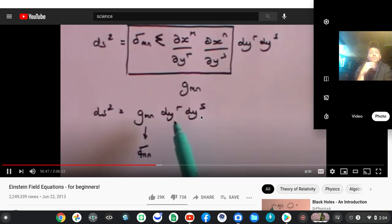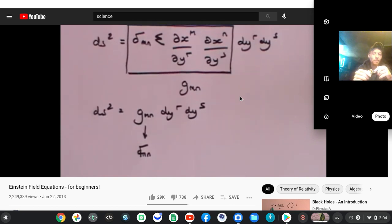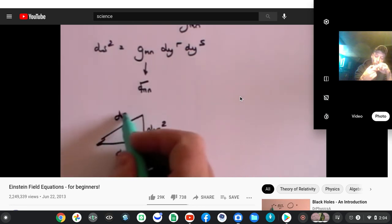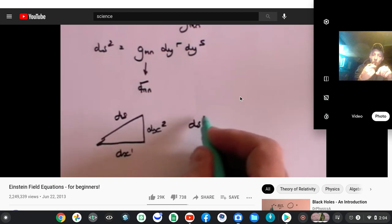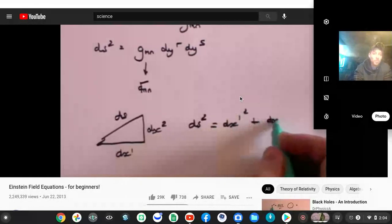So for flat space the metric tensor will either be one or zero depending on whether r equals s or not. In flat space, if that's dx1 and dx2 and that's ds, it is true in flat space that ds squared equals dx1 squared plus dx2 squared. That's Pythagoras in flat space.